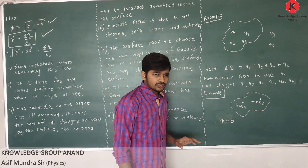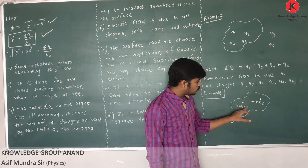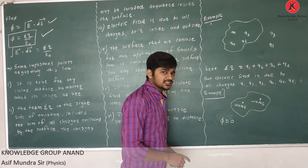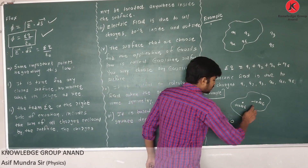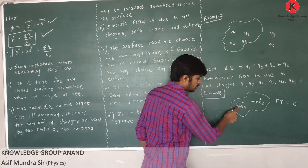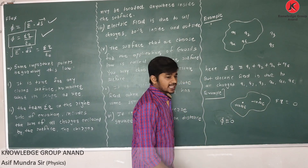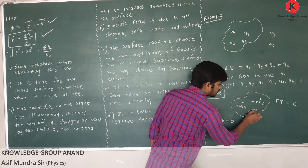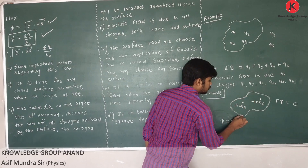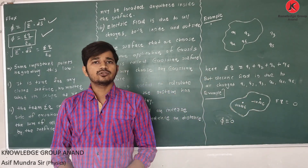Another example: if a closed surface encloses two charges — +10 microcoulombs and −10 microcoulombs — the total charge is ΣQ = 0. Therefore, the flux passing through this surface is also zero.